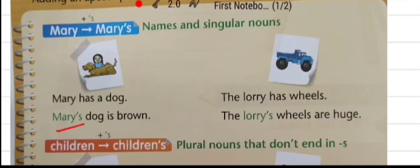A possessive noun always comes before the noun that belongs to it. Now we will see second example. The lorry has wheels. The lorry's wheels are huge. So here, lorry is a singular noun, and the apostrophe S shows the wheels belong to lorry. We add an apostrophe S to make a singular noun possessive.